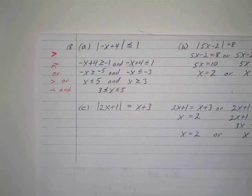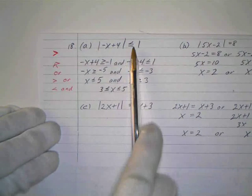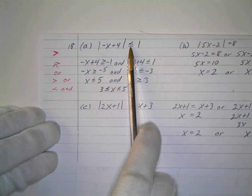Okay, this is number 18. Now we have these absolute values and inequalities and we have to break these up. We have to change this to a disjunction or a conjunction whenever we have this, and these way to check.